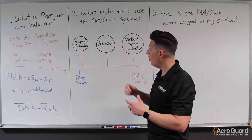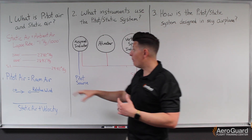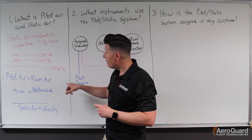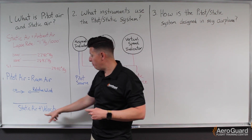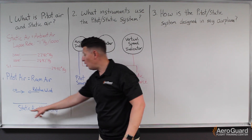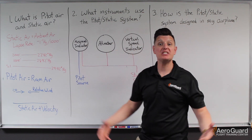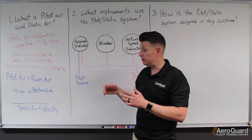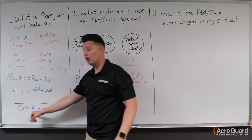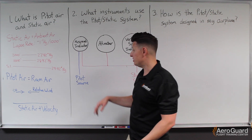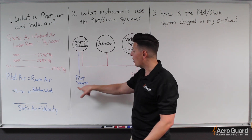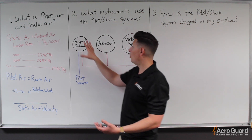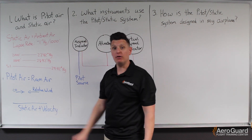Why would the airspeed indicator use both sources? Going back to our first question, the pitot air by itself is comprised of both our speed and the pressure from the ambient static air. So we want to remove the static air component from that equation. They ultimately compare the pitot source to the static source, so that it is only indicating our velocity.